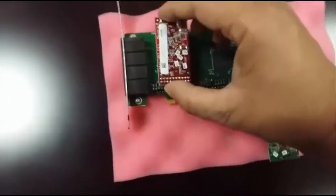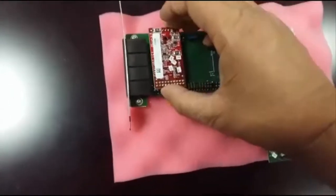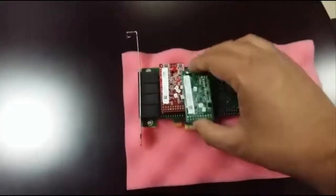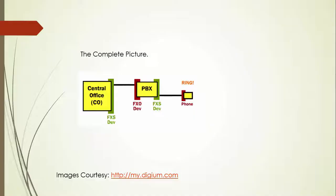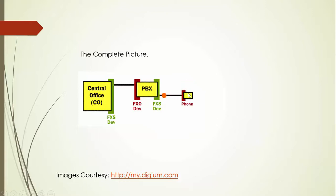To install a module, you just need to push it in on the pins and it will be installed — make sure it's tightly installed. In the complete diagram, you can see the central office or local phone company connected to the Elastix PBX. The FXO port faces towards the phone company, while the FXS port connects to an analog phone or fax machine.